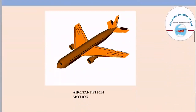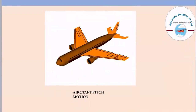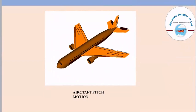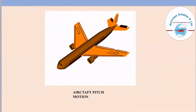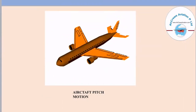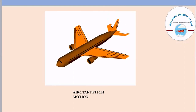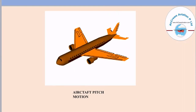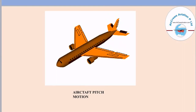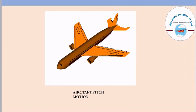The aircraft pitch motion uses control surfaces located at the tail section of the aircraft, also known as elevators. The elevators move simultaneously — either both going up or both going down — and this is used for the up or down movement of the aircraft, that is pitch up or pitch down.